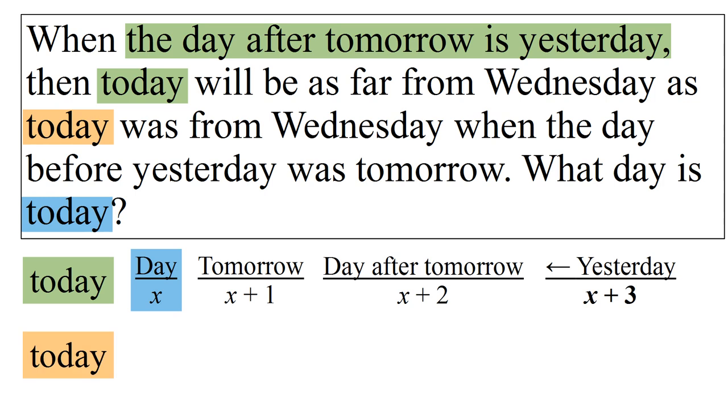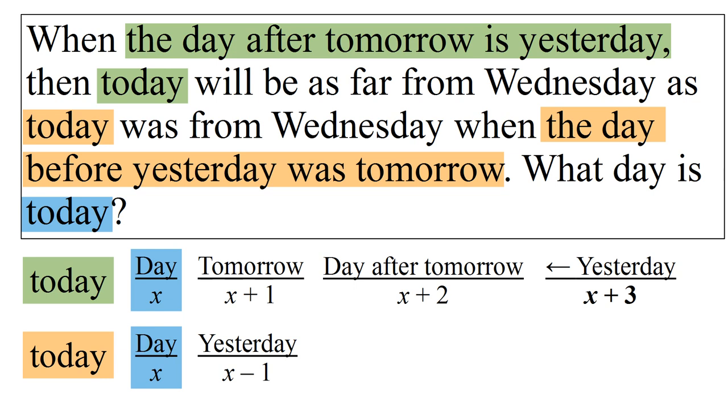Now let's solve for the orange day. Relative to today, this will be when the day before yesterday would be referred to as tomorrow. That day would be referred to as tomorrow if we go one more day back to x minus 3.